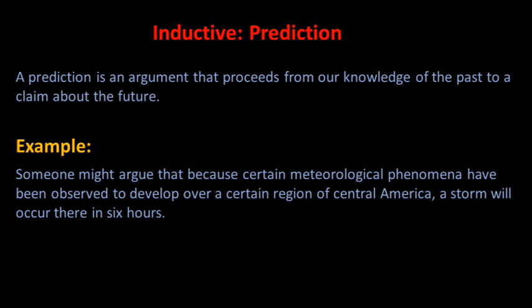A prediction is an argument that proceeds from our knowledge of the past to a claim about the future. For example, someone might argue that because certain meteorological phenomena have been observed to develop over a certain region of Central America, a storm will occur there in 6 hours. Or one might argue that because certain fluctuations occurred in the prime interest rate on Friday, the value of the dollar will decrease against foreign currencies on Monday. Nearly everyone realizes that the future cannot be known with certainty, so whenever an argument makes a prediction about the future, one is usually justified in considering the argument inductive.